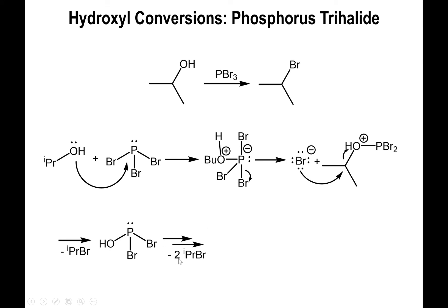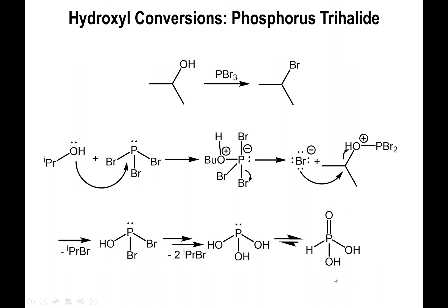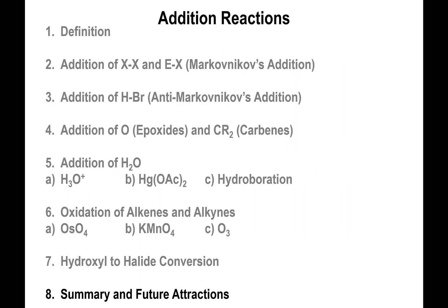This can actually happen two more times because you still have two more phosphorus-bromine bonds that can interact. Ultimately you can form phosphorous acid, which tautomerizes into its more stable form — phosphorous acid. But in the process you're still forming an alkyl bromide, and these molecules can serve as pretty good starting points to continue synthesis.